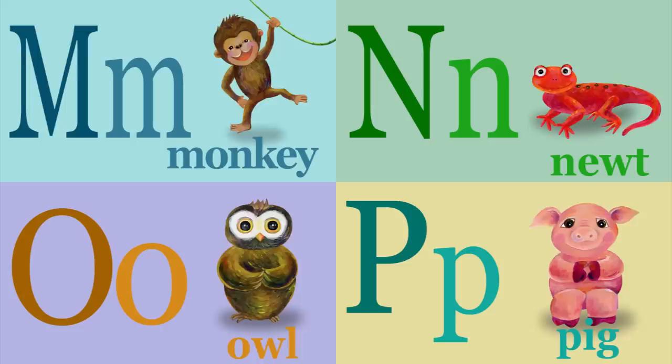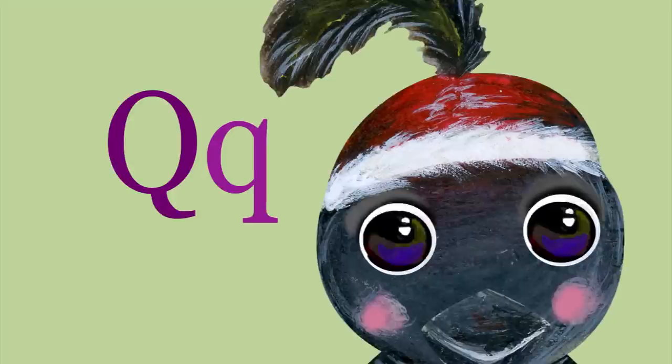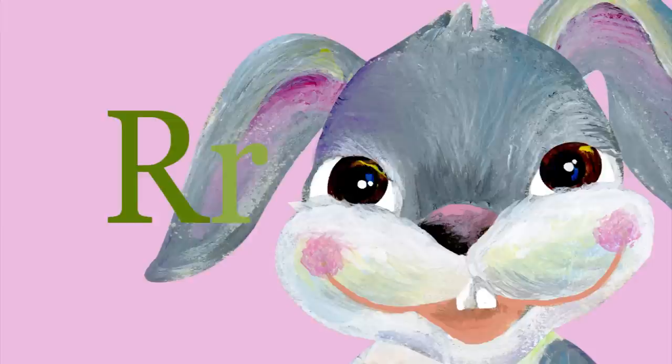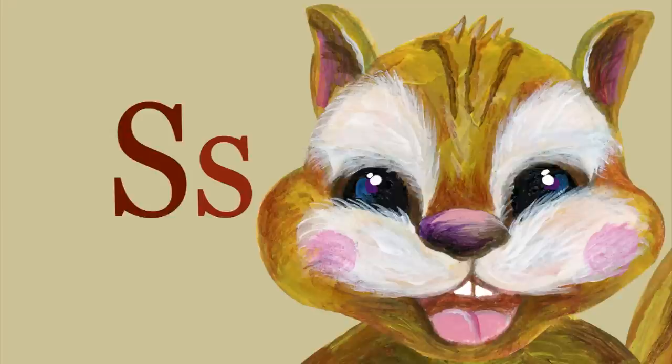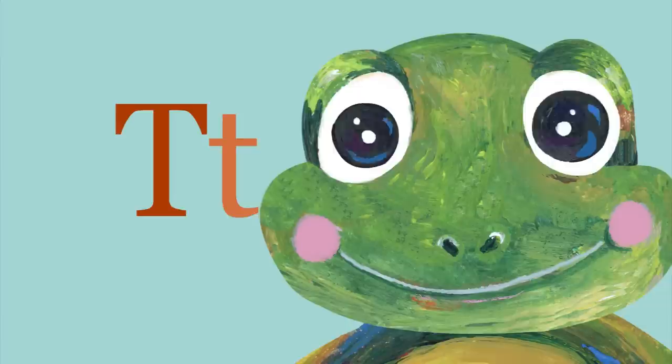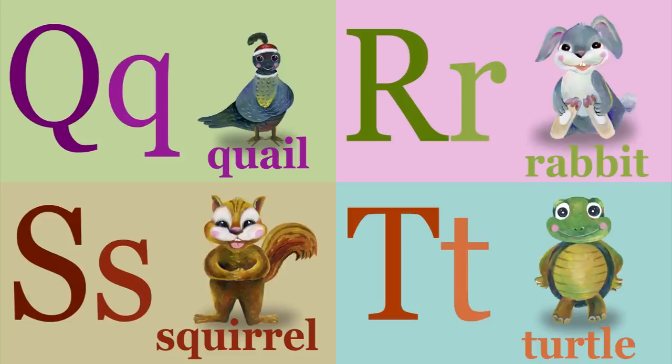Q is for quail, q-q-q-quail. R is for rabbit, r-r-r-rabbit. S is for squirrel, s-s-s-squirrel. T is for turtle, t-t-t-turtle.